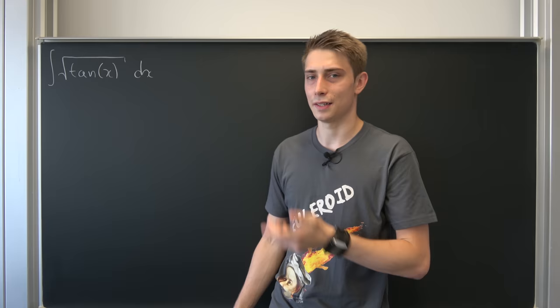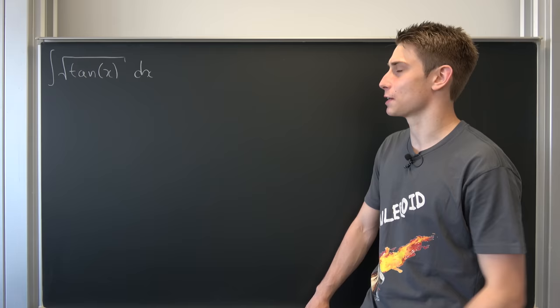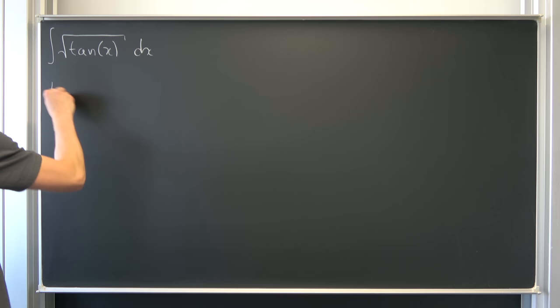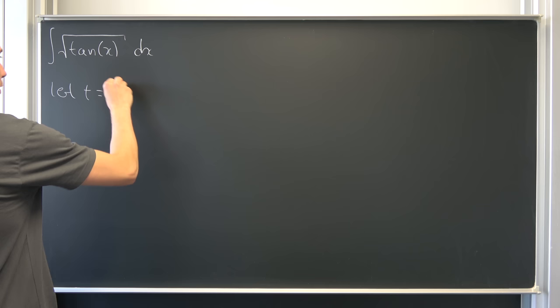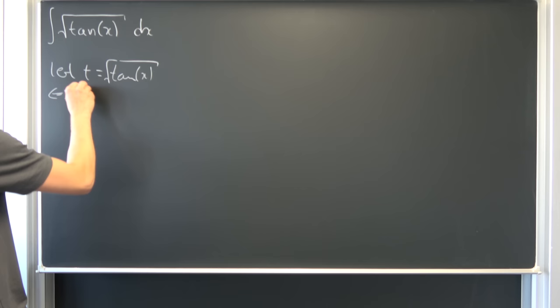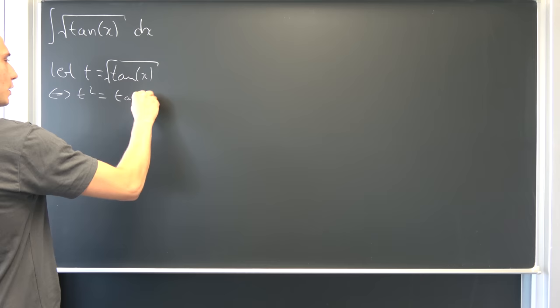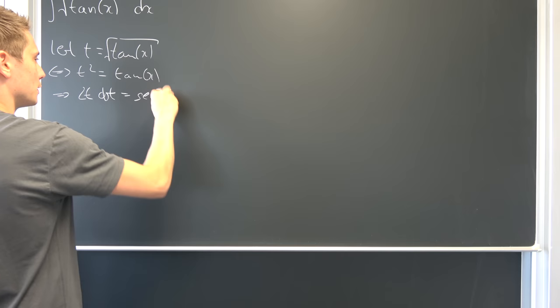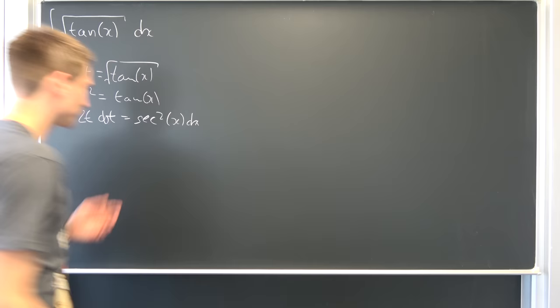So the first one is the integral of the square root of tangent of x. I'm just going to try some stuff out — maybe it does work out. So at first I would introduce a substitution. Let t be equal to the square root of tangent of x. But that also means that t squared is nothing but tangent of x. And we could differentiate this thing now — that also means that 2t dt is nothing but secant squared of x dx.